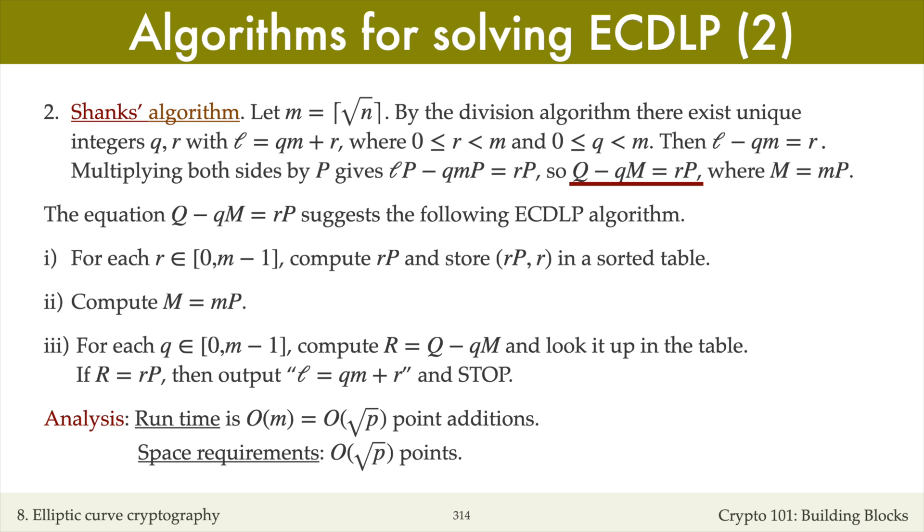The running time of step 1 is m point additions. Step 2 is very fast. For each iteration of step 3, we need one point addition to compute qM from q minus 1 times M that was computed in the previous iteration, and a second point addition to subtract qM from Q. Hence, the running time of the algorithm is O(m) point additions for step 1 and O(m) point additions for step 3, for a total of O(m) point additions.